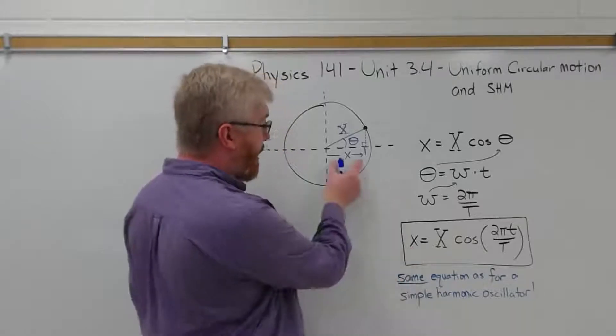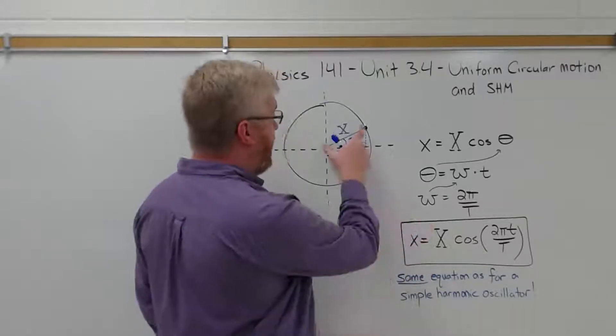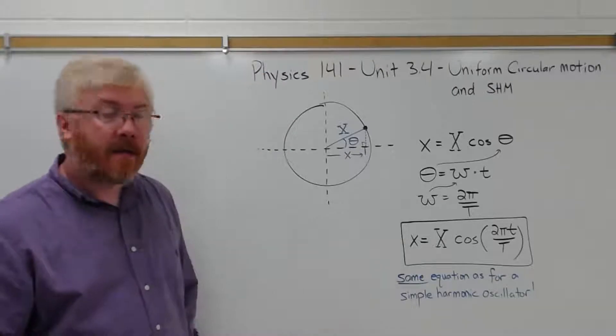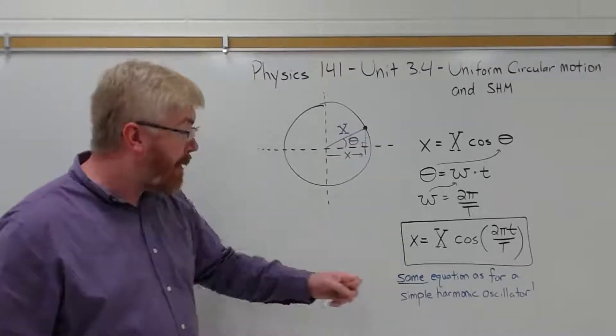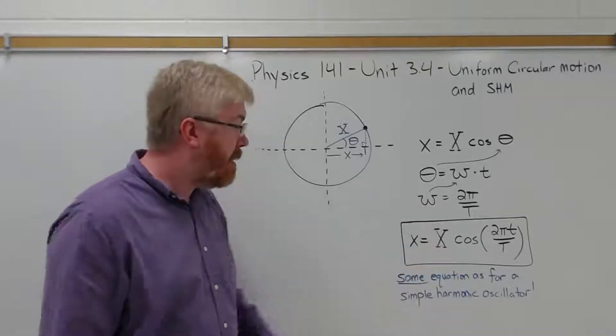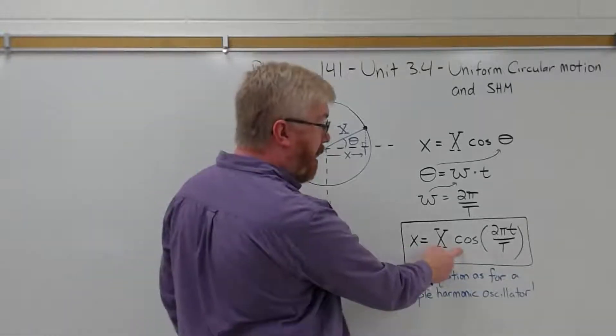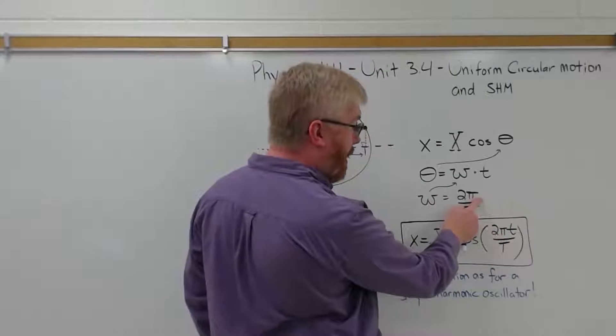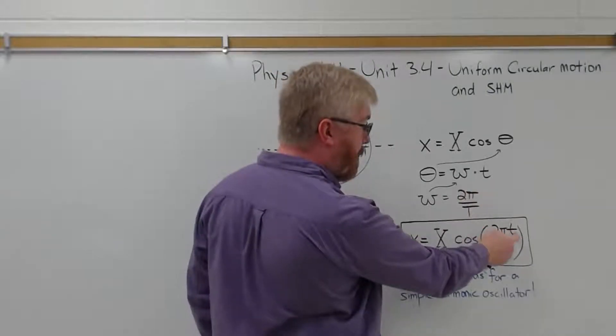X, length X, is equal to the total radius of the orbit, or the circular motion, which is the amplitude here, capital X, times the cosine of two pi, right here, times time over the period.